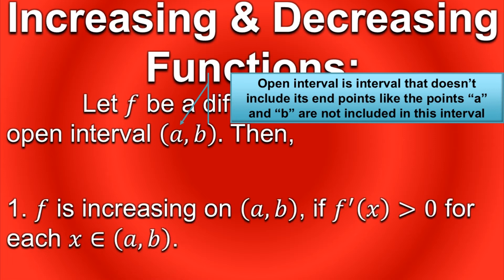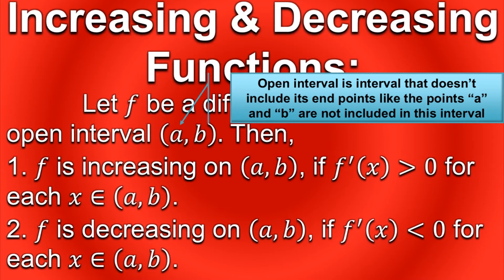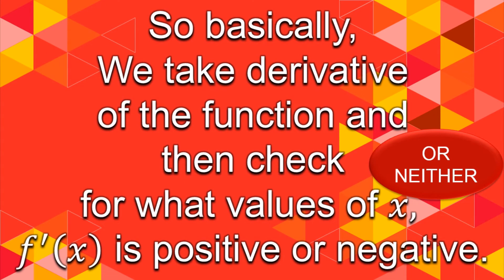The function is increasing on the interval a to b if its derivative is positive, or greater than zero, for all values of that interval. Similarly, f is decreasing on the interval a to b if its derivative is negative, or less than zero, for all values of that interval. Any point where f is neither increasing nor decreasing is a stationary point, and we find these stationary points by putting f'(x) equal to zero.